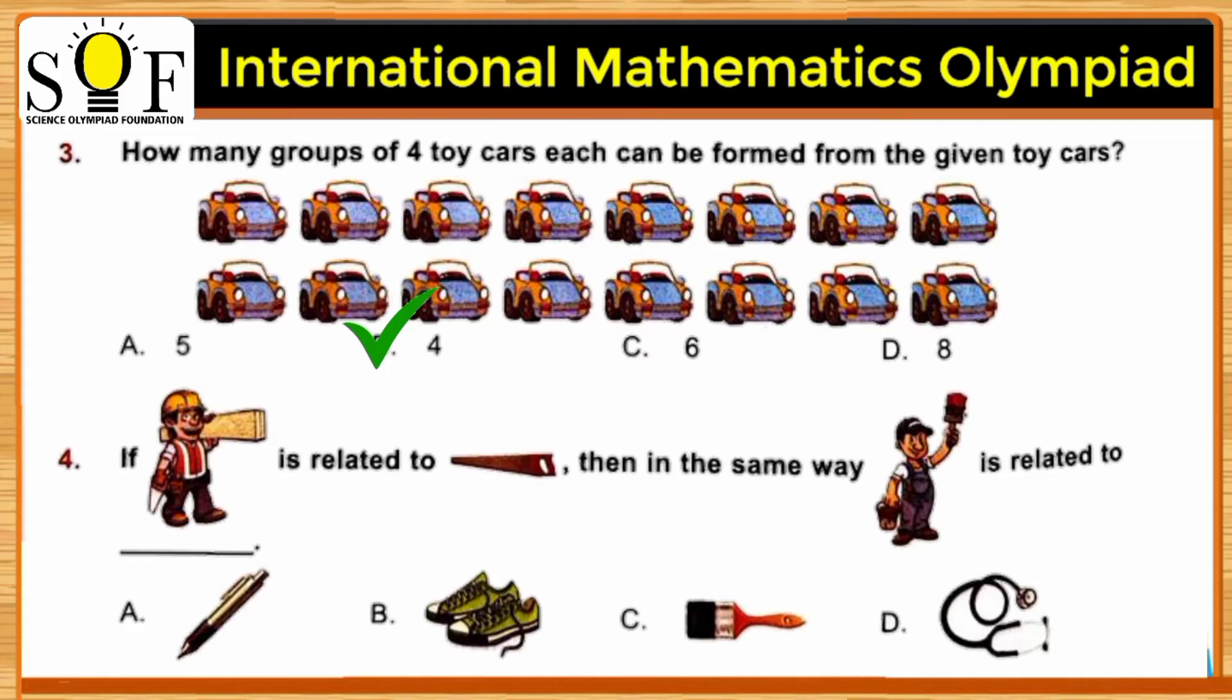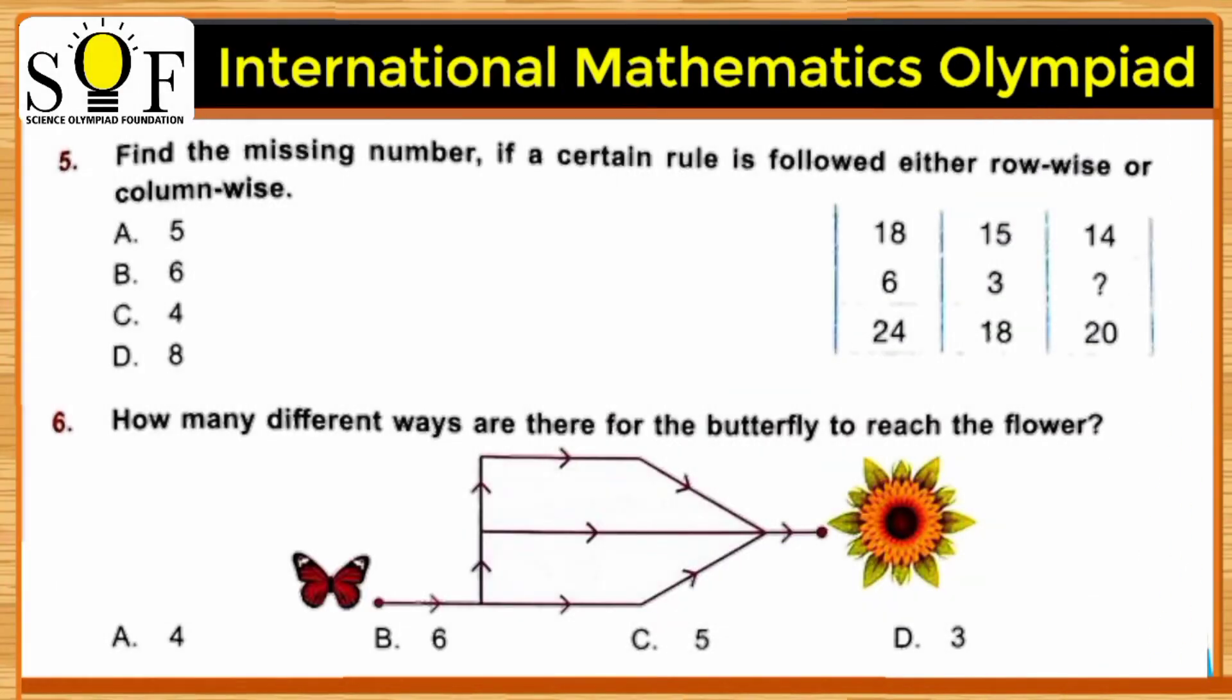The answer is a paintbrush. A painter uses a paintbrush. Find the missing number if a certain rule is followed either row-wise or column-wise. Here in the box there are a few numbers given. Let's see if there is some rule applied. If we add 18 and 6, we get 24.